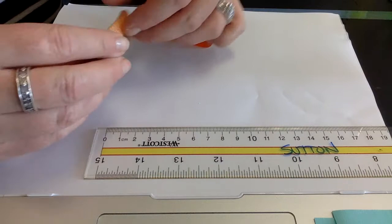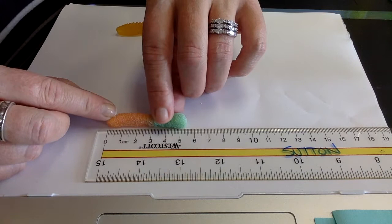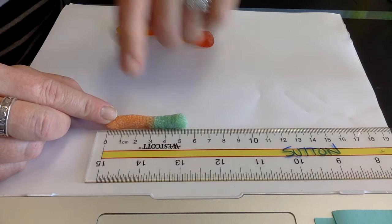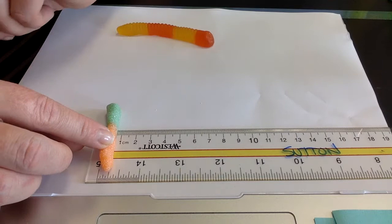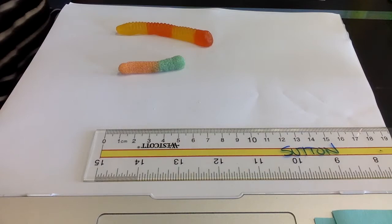For the sour gummy worm, our length is about 5.5. Let's do 5.5. And our width of our plain gummy worm, if I lay it right across the top here, is 0.6 centimeters. That's the sour gummy worm. You should have that data in your worksheet.